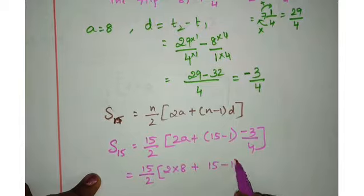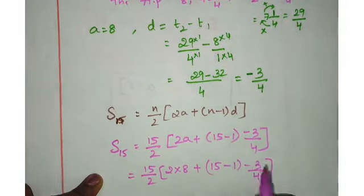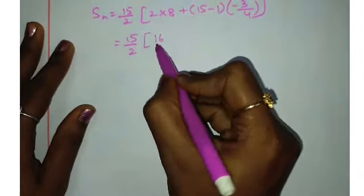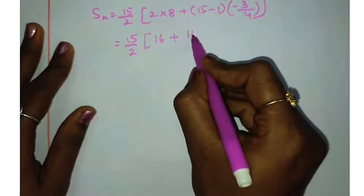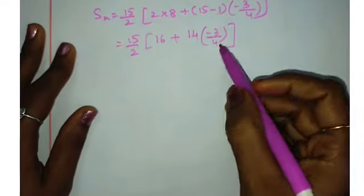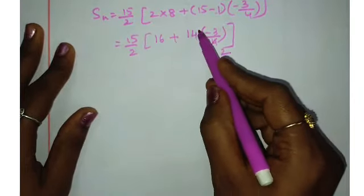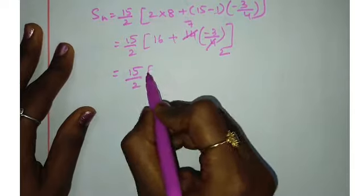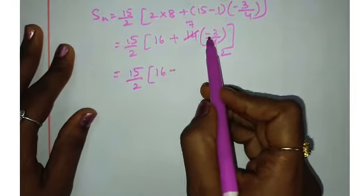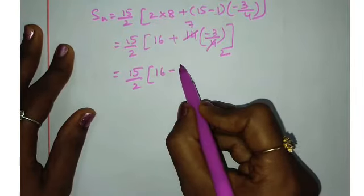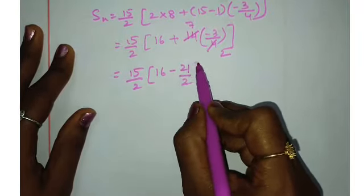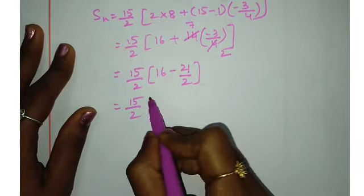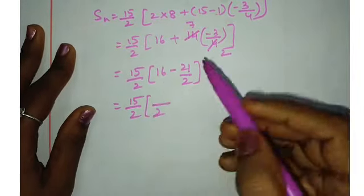15 by 2, 2 into 8 plus 15 minus 1 minus 3 by 4. Got it? Now, 15 by 2 is 16 plus 15 minus 1 is 14 into minus 3 by 4. Here we cancel out, 2 is 2. 15 divided by 2 into 16 plus minus minus 2. S15 minus 2 is 21 divided by 2.